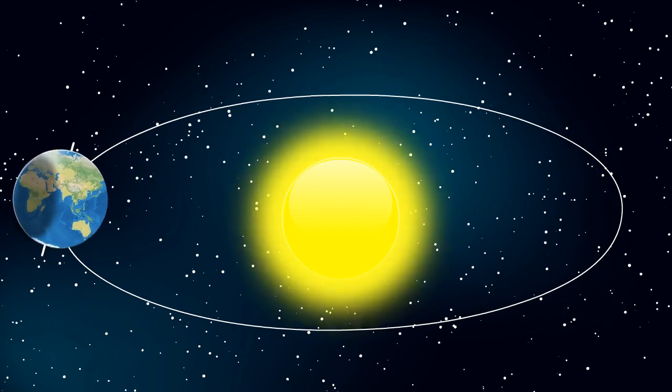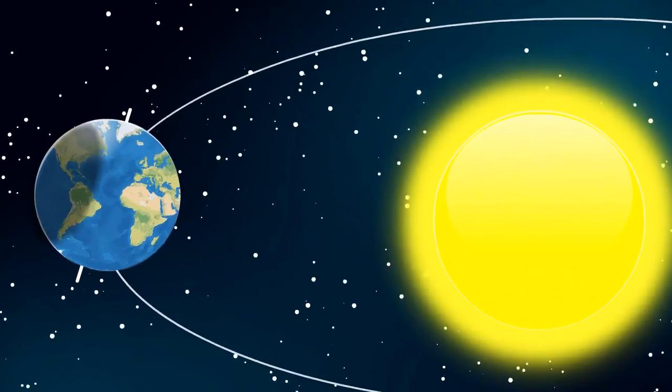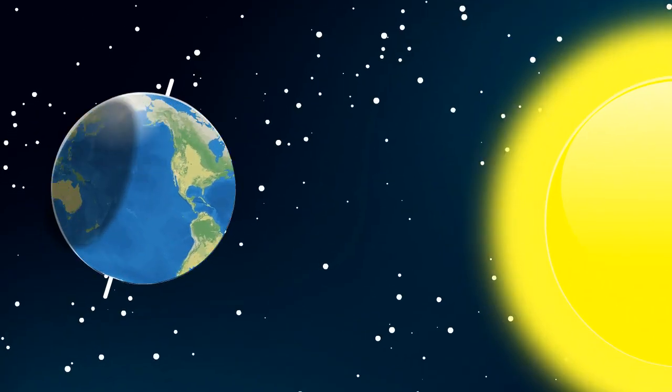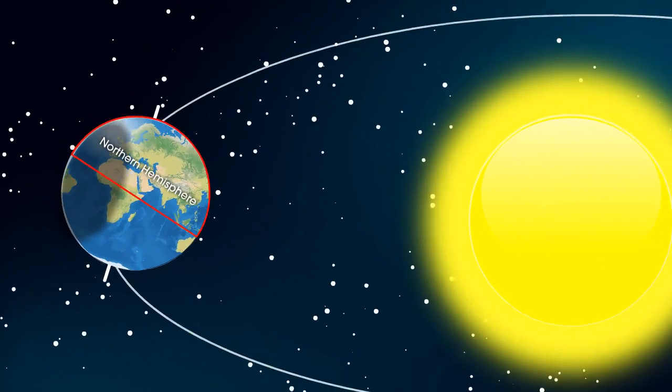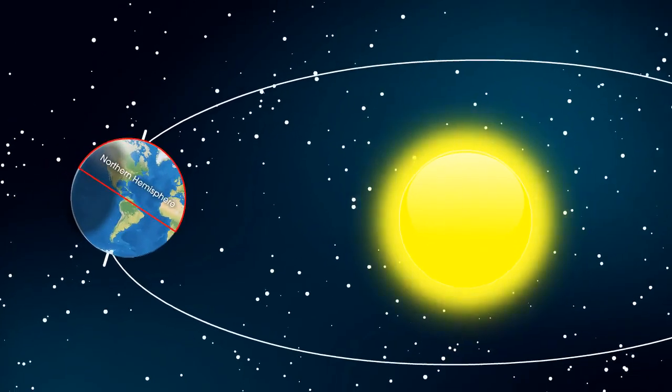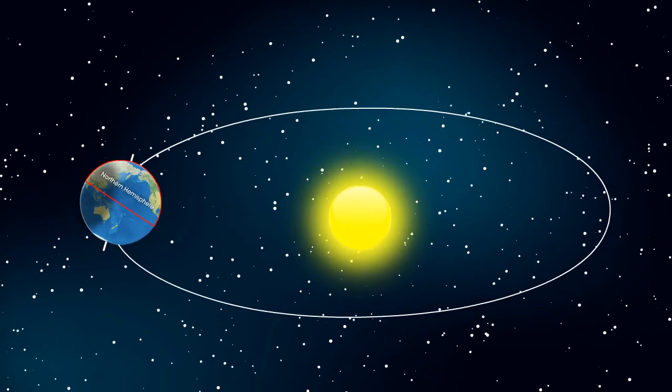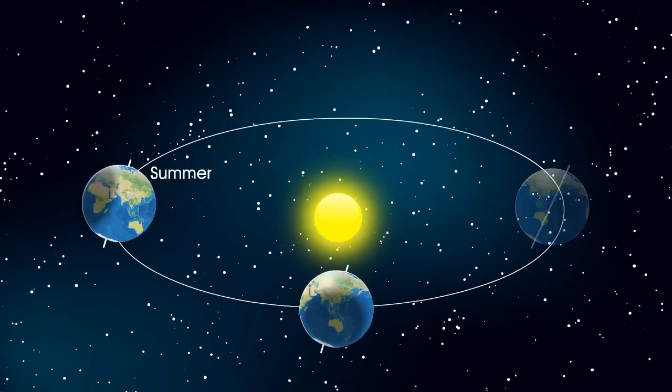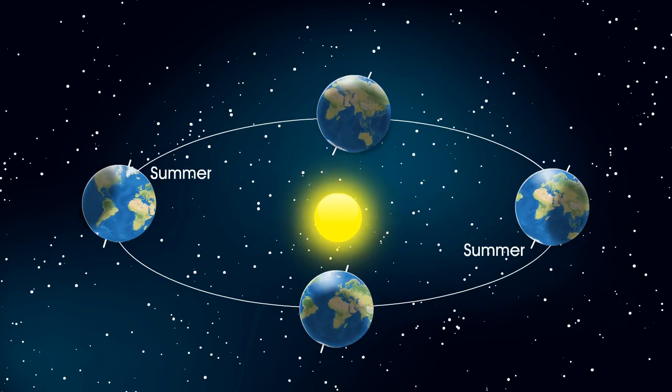This means that one of the hemispheres is closer to the Sun than the other. When the Northern Hemisphere is tilted towards the Sun, it receives more sunlight. This brings summer in the Northern Hemisphere.